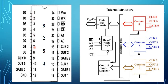Pin number 9 is clock input of counter 0. Pin number 10 is output of counter 0. Pin number 11 is gate input of counter 0. Pin number 12 acts as ground signal. Pin number 13 is output of counter 1. Pin number 14 is gate input of counter 1. Pin number 15 is clock input of counter 1. Pin number 16 is gate input of counter 2.